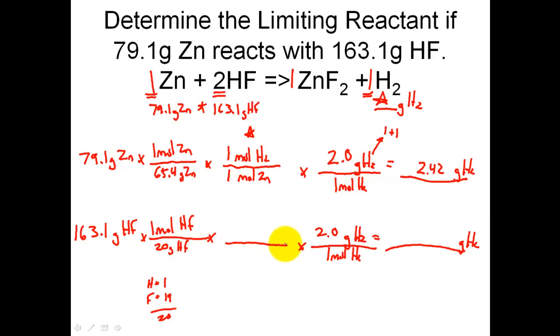And now our key step, let's leave behind hydrogen fluoride. Hydrogen fluoride has a 2 in front of it, so that's going to be 2 moles of hydrogen fluoride per every 1 mole of H2. And when we multiply all of this out, we're going to find out that I have 8.155 grams of H2 that can be produced.